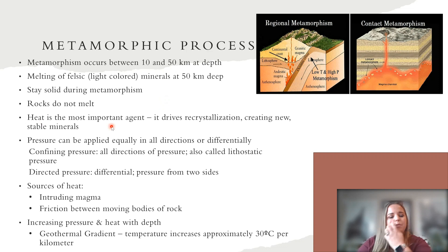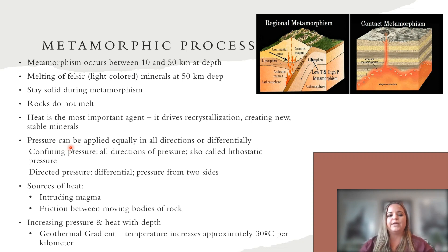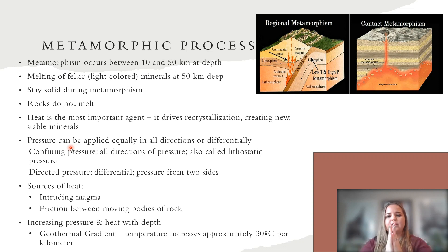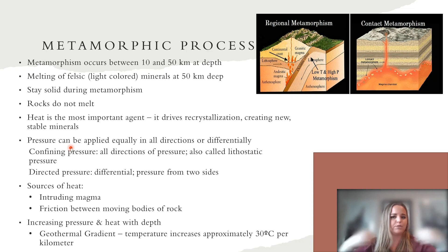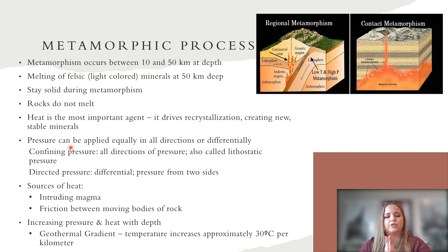Heat is the most important agent of metamorphism because it drives recrystallization that creates new stable minerals. Pressure can be applied in all directions as confining pressure, making the rock smaller, or it can be applied differentially from two sides — like when two tectonic plates collide — causing bending and folding in the rocks. This directed pressure eventually gives us something called foliation.